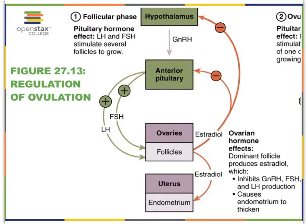As these follicles begin to mature, they produce estrogens. These estrogens can help the uterus start forming the endometrium, but as estrogen levels begin to rise slowly but surely, they actually feed back to the pituitary gland and the hypothalamus to inhibit further release of their hormones.